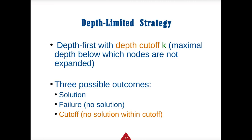The depth-limited strategy combines depth-first with a depth cutoff of K — a finite number of depths we'll check. This has three possible outcomes: a solution, a failure (no correct search path exists), or a cutoff (no solution within the depth limit). With depth-limited, you may not find a solution because it's too far down the tree. However, it limits time complexity — K effectively becomes M — though the result may be suboptimal.